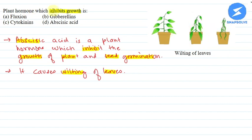So this is the wilting of leaves. What inhibits growth is abscisic acid. And the other, the fluxion, gibberellins and cytokinins promote growth. So the correct answer will be our option.